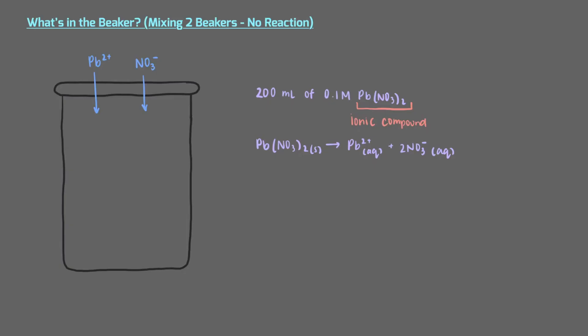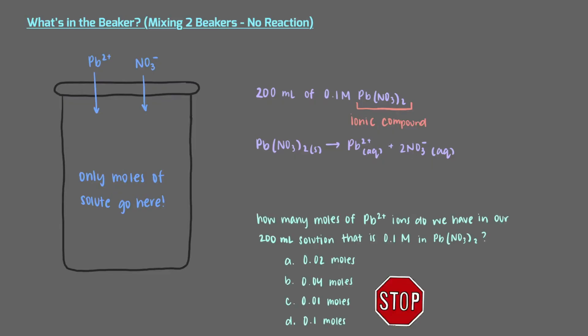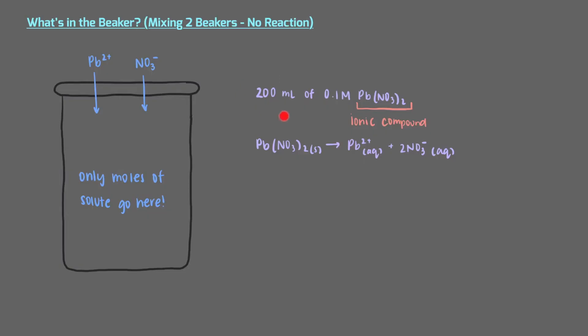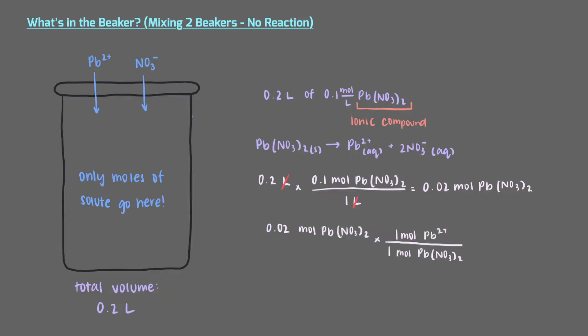Now we know which solutes we will actually find in our beaker. But before we put anything in our beaker, we have to figure out how many moles of each solute we have in our solution. We have 200 milliliters or 0.2 liters of a solution with a concentration of 0.1 molar — that's 0.1 moles per liter. Multiplying 0.1 moles of lead nitrate per liter by 0.2 liters gives us 0.02 moles of lead nitrate. Since each mole of lead nitrate dissolves to make 1 mole of lead ions, we have 0.02 moles of lead ions.